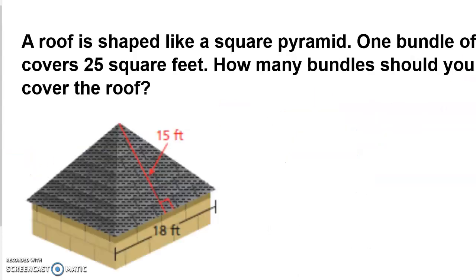Also, if we look at this, when you're going to be able to solve real-life application problems, this one, your roof is shaped like a square pyramid. One bundle is going to cover 25 square feet. How many bundles should you buy to cover the roof? So think about it this way. You're only covering the roof. So the base of this square pyramid, we don't need.